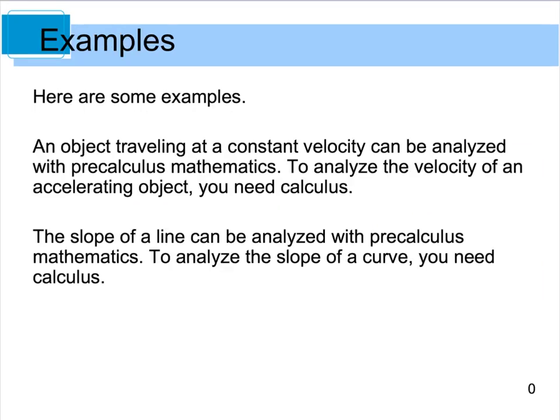You do have these examples in your book, but just a few things that we can look over here real quick. An object traveling at a constant velocity can be analyzed with pre-calc math. To analyze the velocity of an accelerating object, you need calculus. When we're looking at velocity that's changing because of acceleration, you have to have calc. You cannot do that with pre-calculus. Likewise, if you're looking at the slope of a line, you can use pre-calc for that, but if you want to look at the slope of a curve, you need calculus.